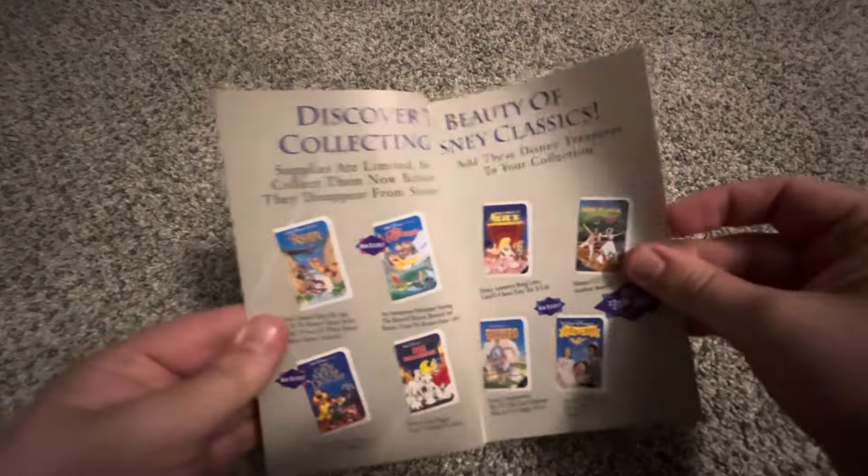This is the 1992 VHS. This is version 1 of it, which has a preview for Pinocchio, but not till after the movie's over. Here is the spine of Beauty and the Beast.